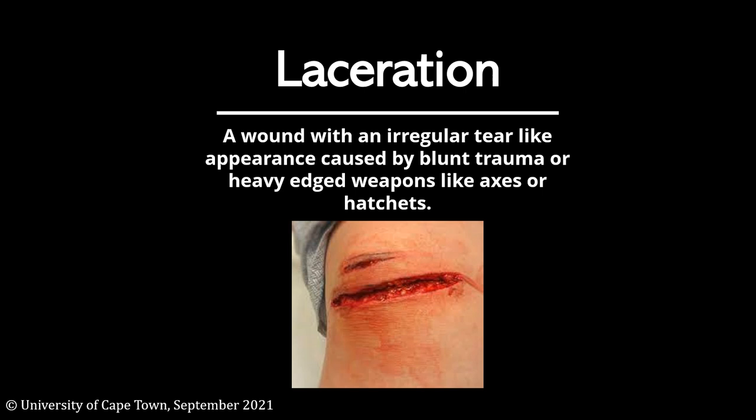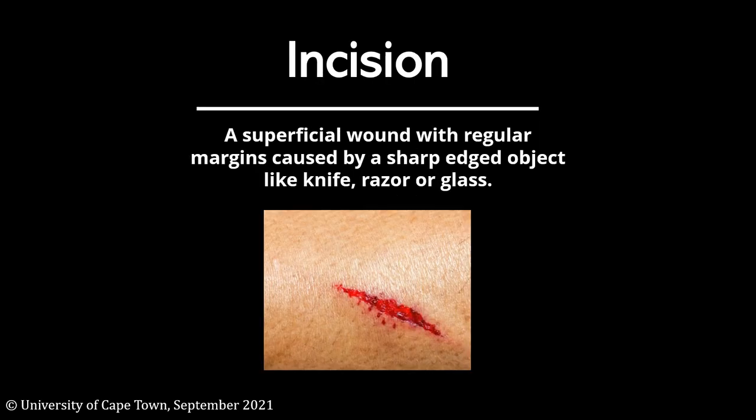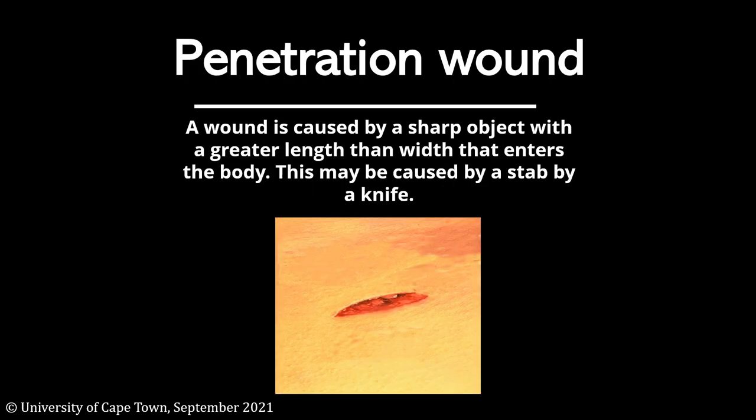A laceration is a deep wound with an irregular, tear-like appearance caused by blunt trauma or a heavy edged weapon like an axe or a hatchet. An incision is a superficial wound with regular margins caused by a sharp edged object like a knife, razor, or glass.